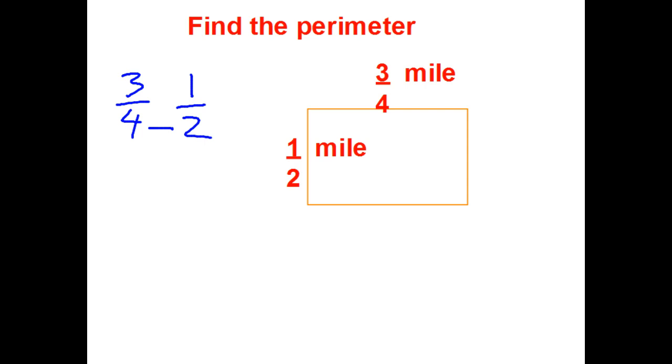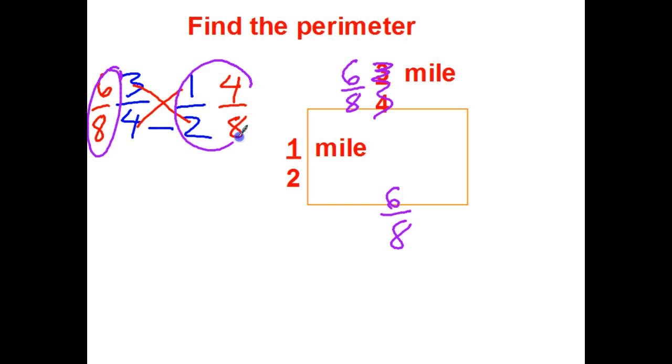Let me switch over to a different color here. Four times two is eight, so I'm changing both denominators to eight. Three times two is six. One times four is four. So I've changed my three-fourths. It's not three-fourths, it is now six-eighths. And if the top is six-eighths of a mile, the bottom is six-eighths of a mile. And right here, I just changed my one-half to four-eighths. So this is now four-eighths. And if this side of the rectangle is four-eighths, this side of the rectangle is four-eighths.